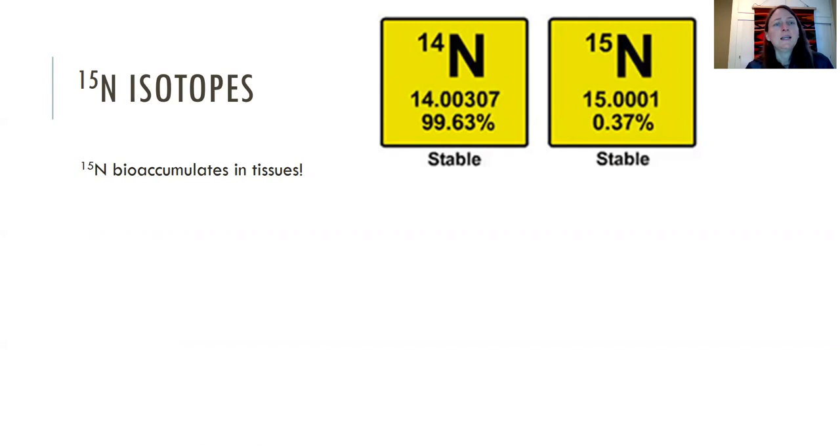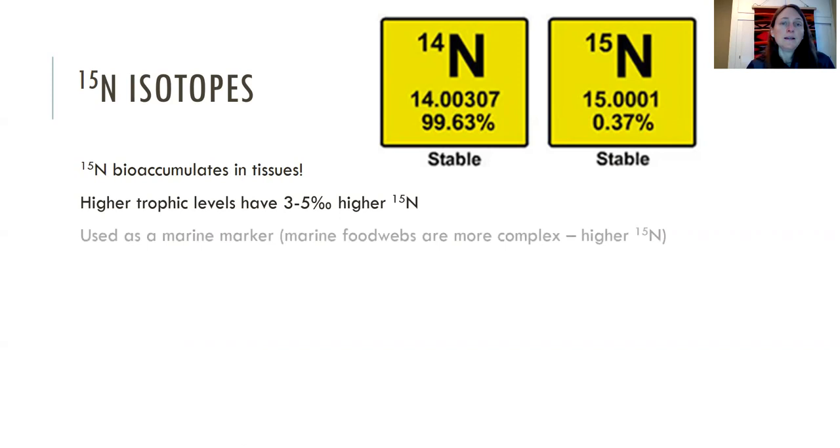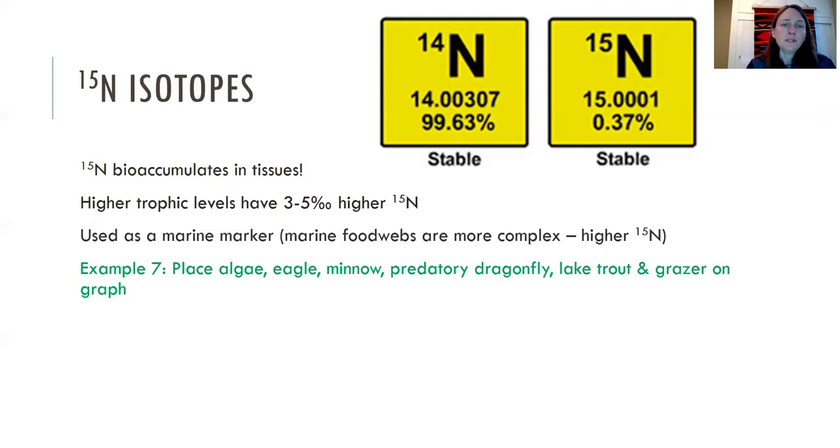So to get a complete picture of the food web, we need to learn about N15 isotopes. N15 is the heavy isotope of nitrogen, and it bioaccumulates in tissues, so higher trophic levels have a three to five per mil higher N15 value. And what's really cool about this is it can be used as a marine marker. Marine food webs are much more complex, and so they end up with more trophic levels, and so they end up with higher N15 values. So if you're studying a stream system and you want to know how much of an influence salmon, like returning anadromous salmon from the sea, have on the system, you can look for these N15 values, which would be really high.